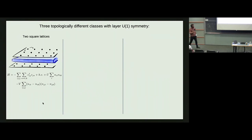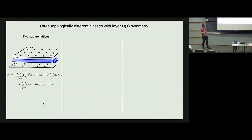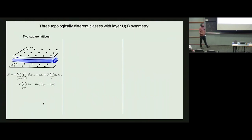Let's distinguish from the outset between three topologically different classes of such exciton insulators. To be concrete, in this part of the talk, let's consider a physical situation where this additional U(1) symmetry is a layer U(1) symmetry, which means these two species of electrons literally live in two different layers.